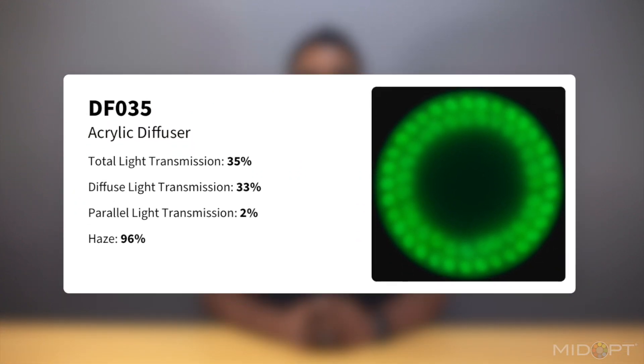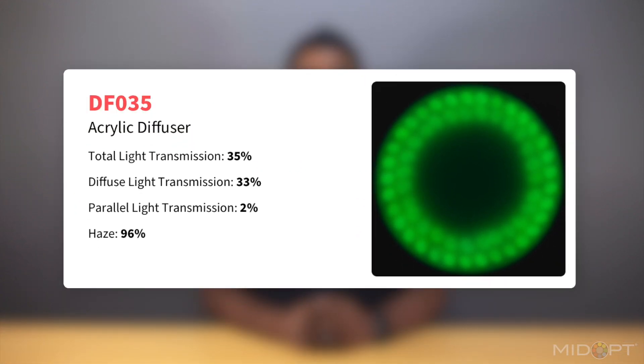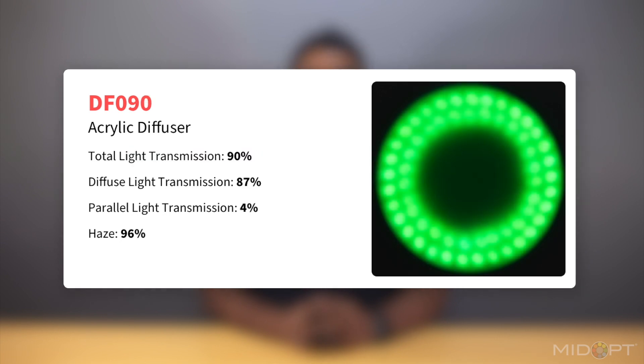For example, a DF-35 will allow for 35% of transmitted light, while the DF-90 will allow for 90% transmission.